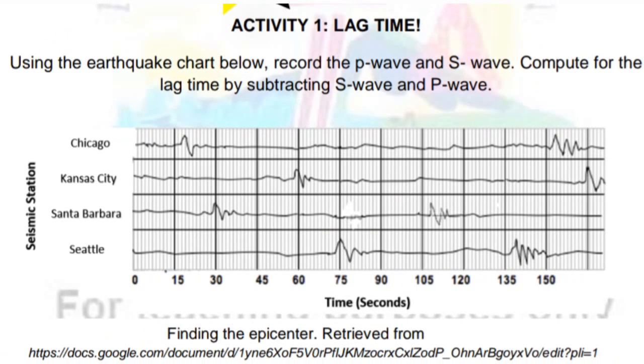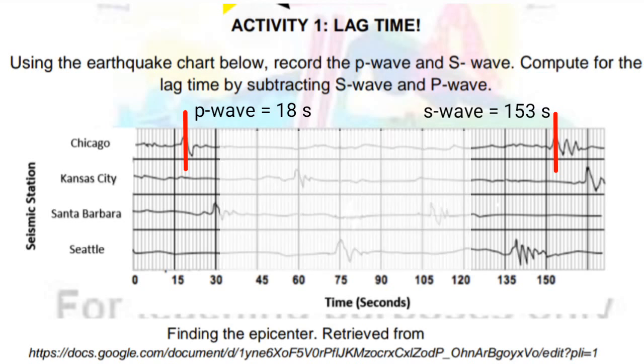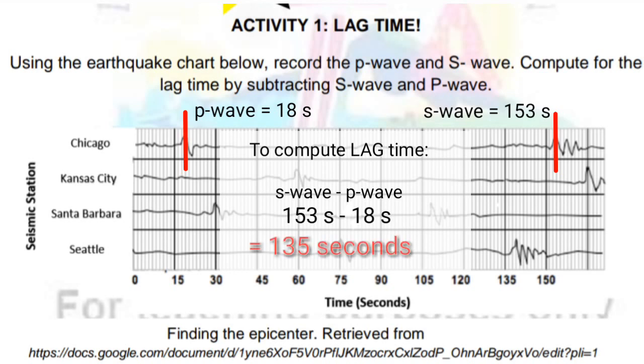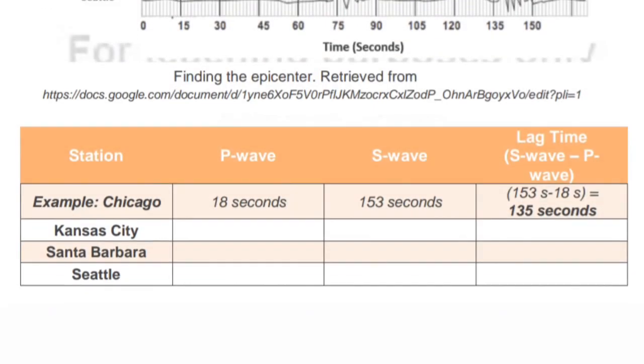Now, let's use Chicago as an example. The first time the seismogram jumps is, we have 18 seconds, and that is the arrival of the P wave. P wave is 18 seconds. And then, if you are going to look at the record, we have minor quakes, and the second jump is 153. So, the arrival of the S wave is 153 seconds.